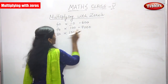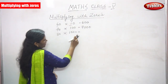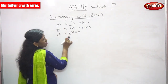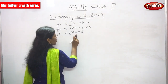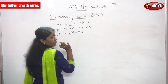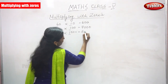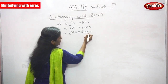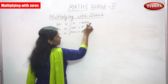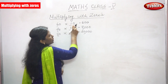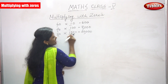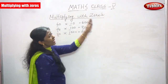The answer is 7000. Next is 80 into 1000. First, multiply only the numbers: 8 into 1, you get 8. Count the zeros — 1, 2, 3, 4 — there are four zeros, so you write four zeros after the number. That is 80,000. So: 60 into 10 is 600, 70 into 100 is 7000, 80 into 1000 is 80,000. This is multiplying by zeros.